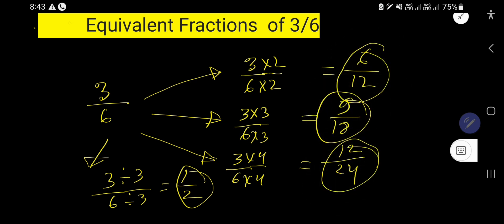Then 6 over 12, 9 over 18, and 12 over 24 are the equivalent fractions of 3 over 6.